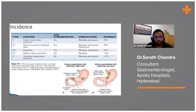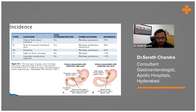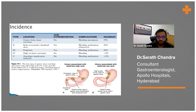Here you can see the types of gastric and duodenal ulcers. These are the five types of gastric and duodenal ulcers which will be used by surgeons to know which patients require surgery and what type of surgery. Before surgery, they will plan according to that.